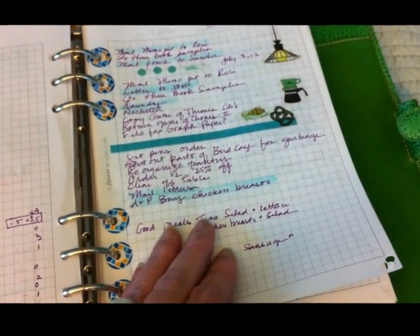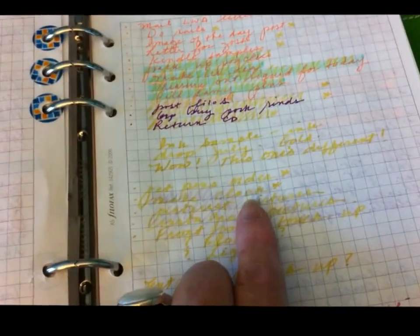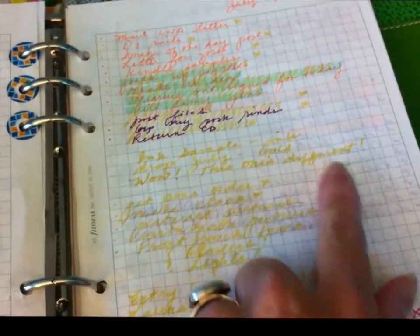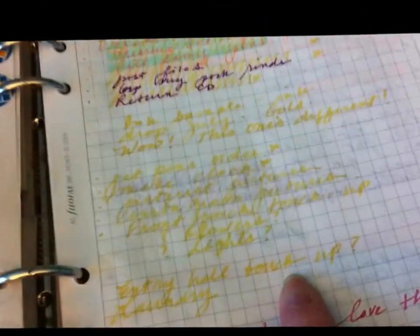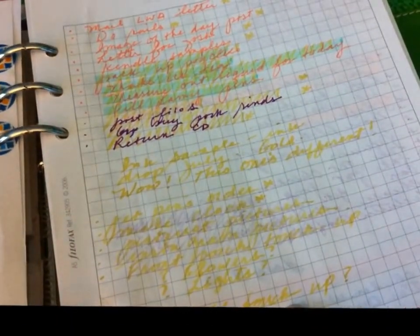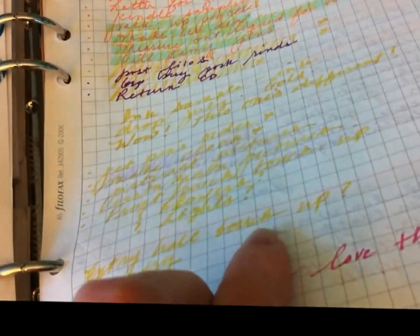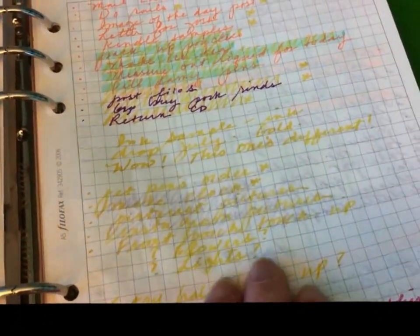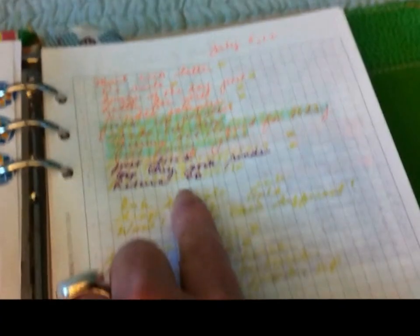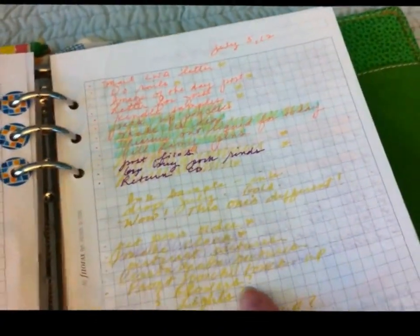This ink, this gold ink was in the ink drop, Goulet ink drop this month, and it's kind of a strange color actually. It's gold, almost like a touch of green to it, which to me kind of makes it goldish, but it's much better as a highlight than it is to actually write with.